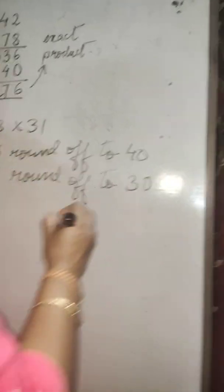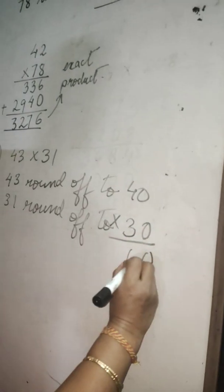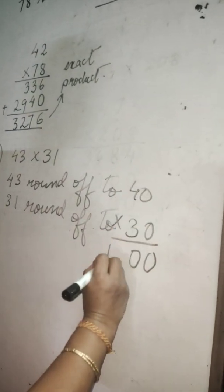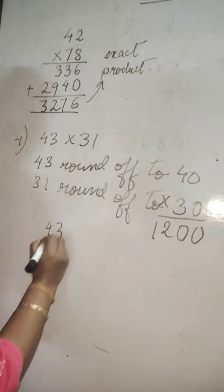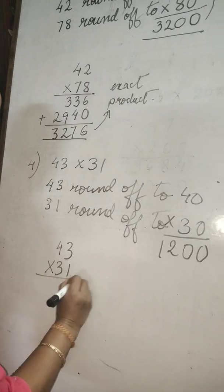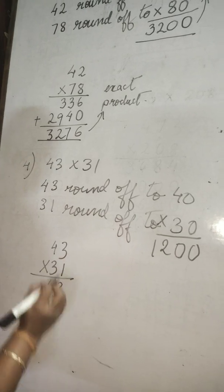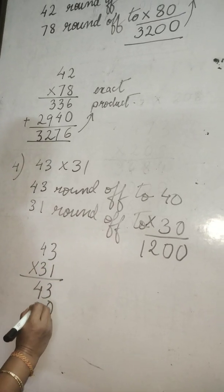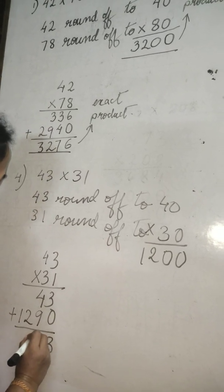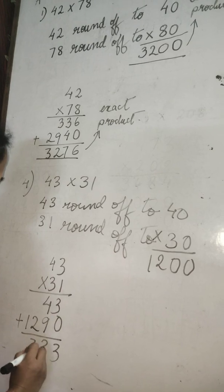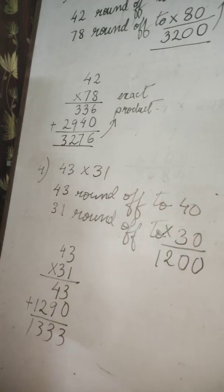Now find the estimated product: 40 times 30. You get two zeros, and 4 times 3 is 12, so the estimated product is 1200. Now find the exact product of 43 into 31. 1 times 3 is 3, 1 times 4 is 4. Leave the first place, put 0. 3 times 3 is 9. 3 times 4 is 12. Now add: 9 plus 4 is 13, carry 1. So this is the exact product, and this is the estimated product.